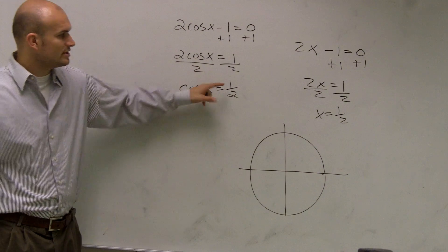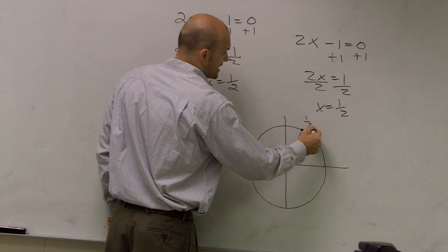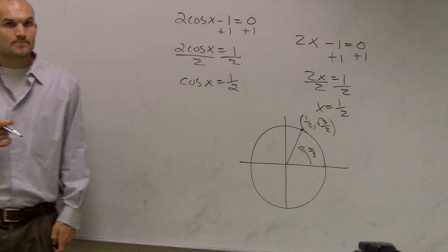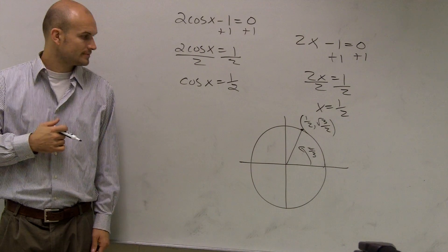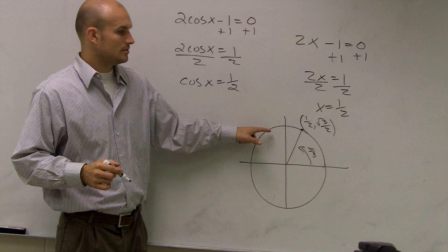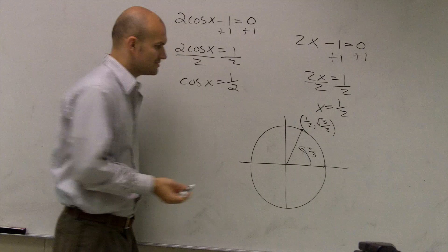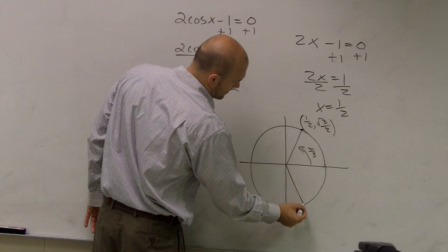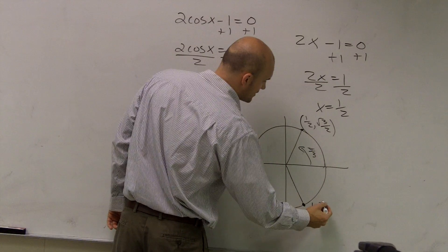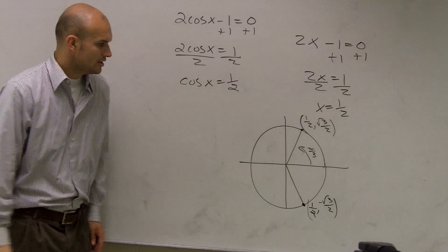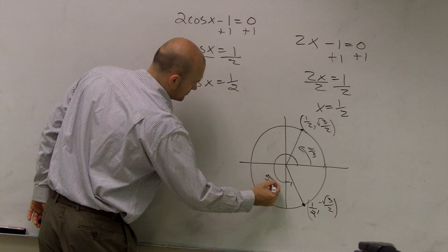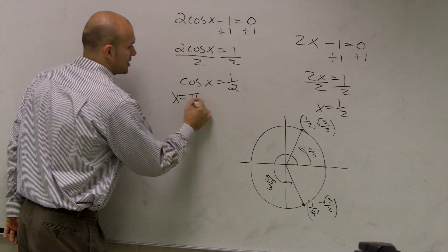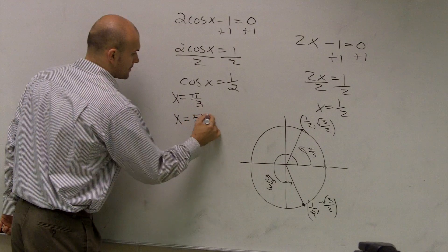We look at that and say, when does cosine equal 1 half? Pi over 3 is one answer. Is that the only answer? No. You could have negative pi over 3, but if we're looking for a positive angle, it would be 5 pi over 3. Since we're only dealing with the cosine, my two angles are pi over 3 and 5 pi over 3. So I have two answers: x equals pi over 3 and x equals 5 pi over 3.